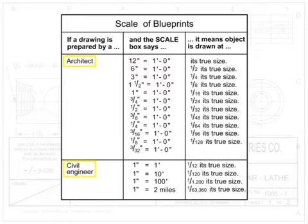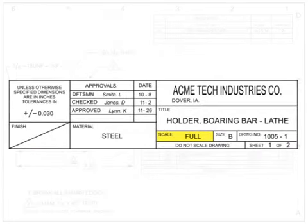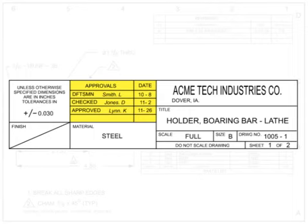Architects and civil engineers use different types of scales, as shown here. The signature block contains all signatures required for the drawing to be officially released and published by the creator. Signatures and approvals should all be signed; if they are not, the drawing may not be an official release that is ready for manufacture.